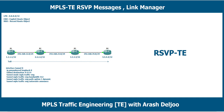The tunnel configuration is: Interface tunnel 0, IP unnumbered loopback 0, tunnel destination quad 4 (4.4.4.4), tunnel mode MPLS traffic engineering, tunnel MPLS traffic engineering bandwidth requirement 512 kilobits per second, tunnel MPLS traffic engineering path option one dynamic, and tunnel MPLS traffic engineering autoroute announce.